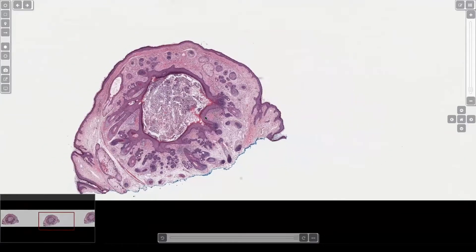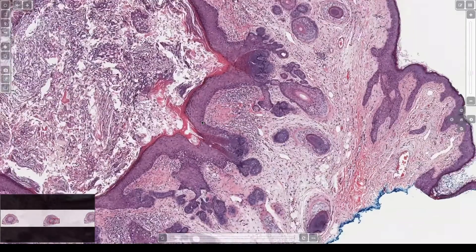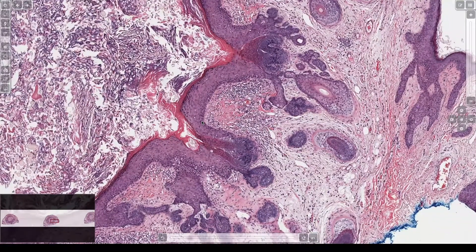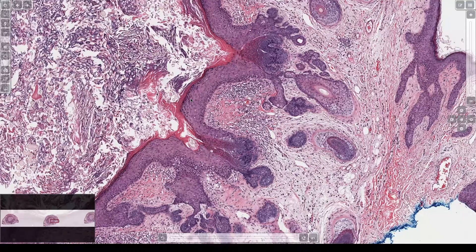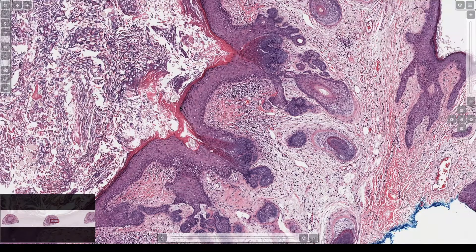And the center, the central cyst will look very similar to like a follicular and fundibular cyst or what some pathologists call it, epidermal inclusion cyst. And it'll have a granular layer and a flaky loose keratin.